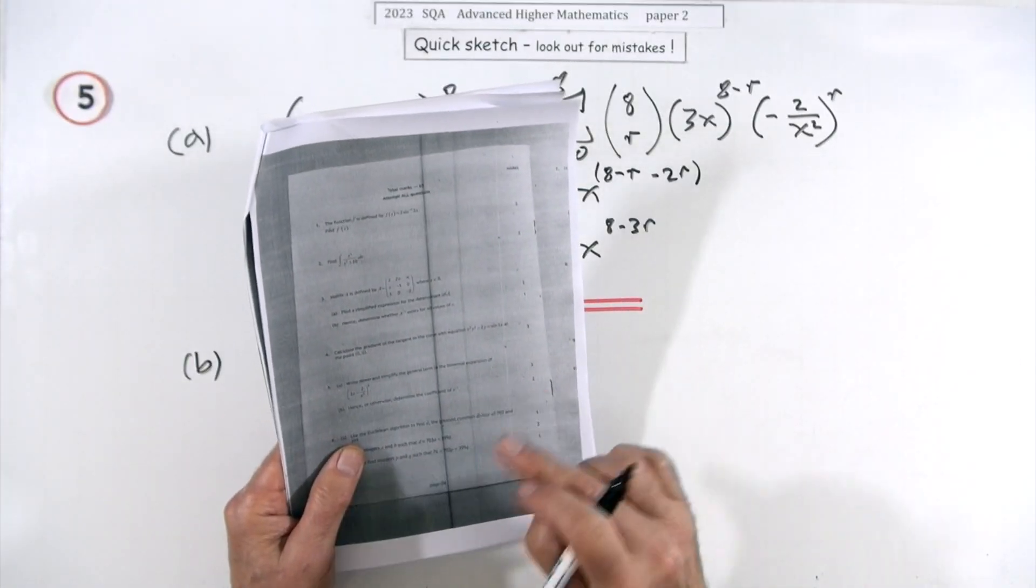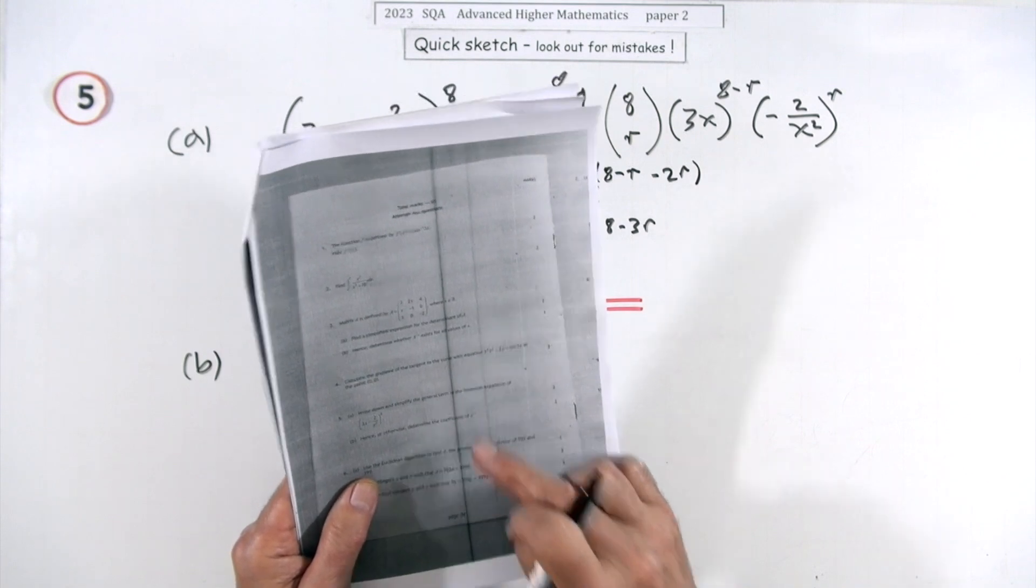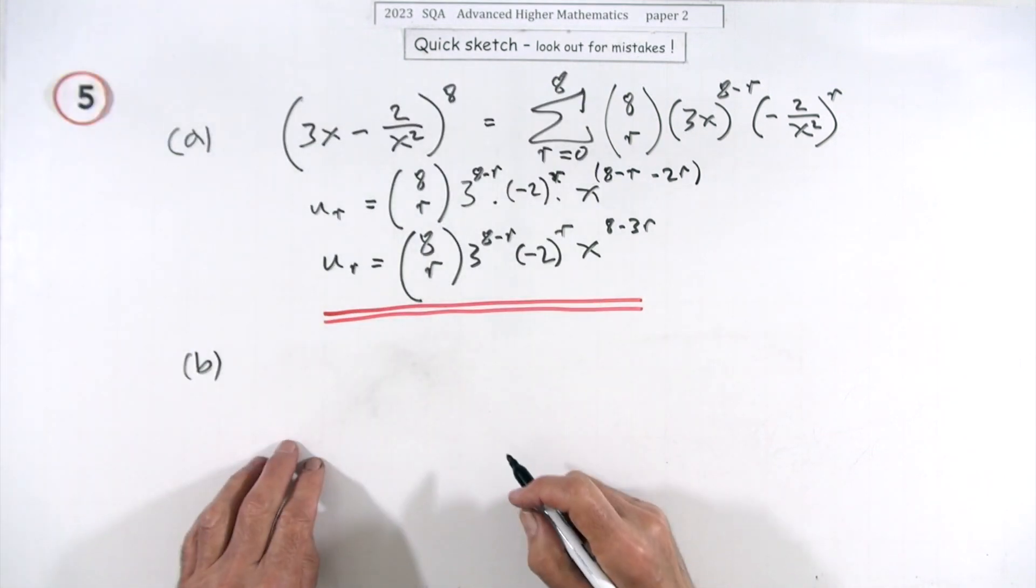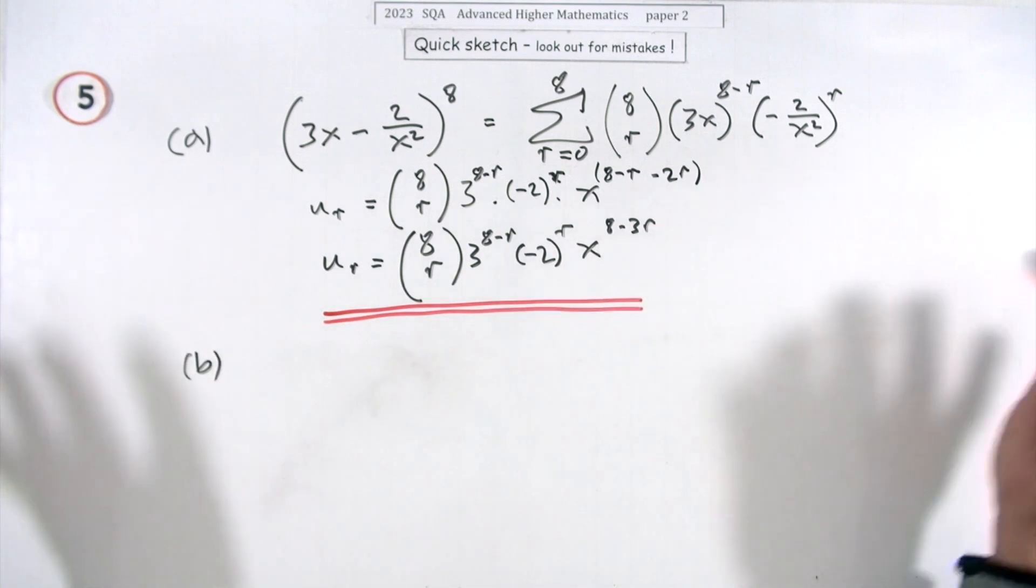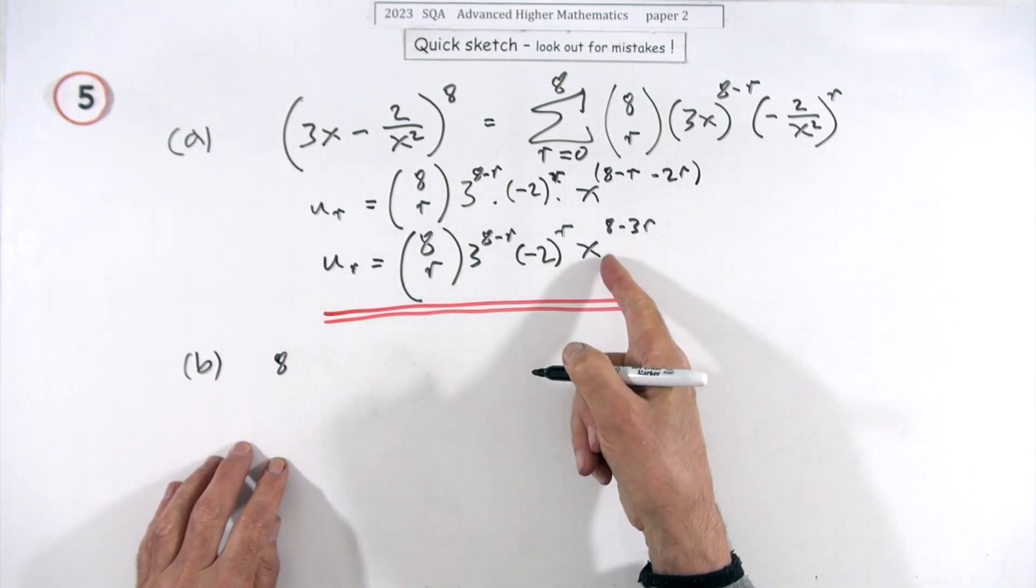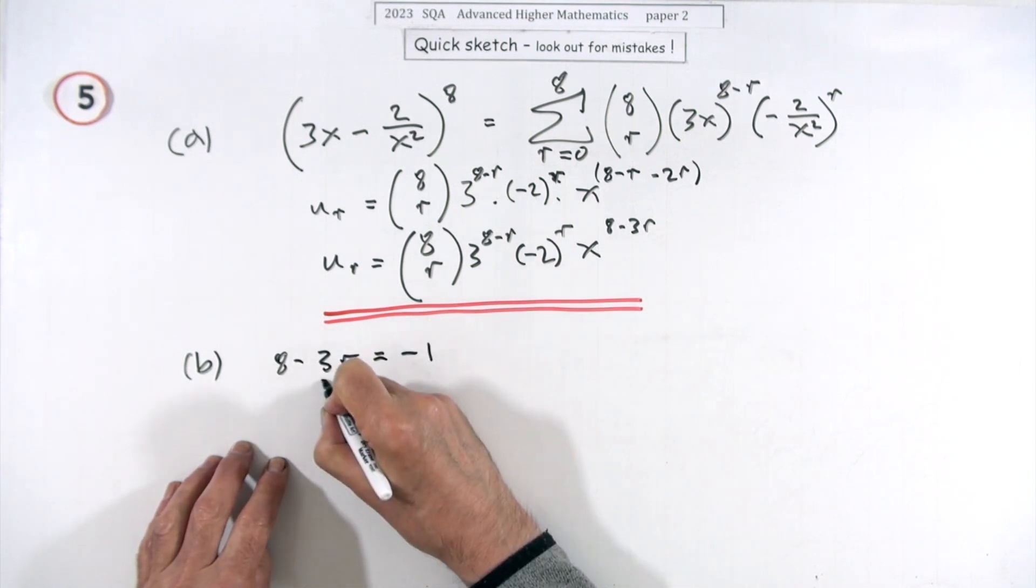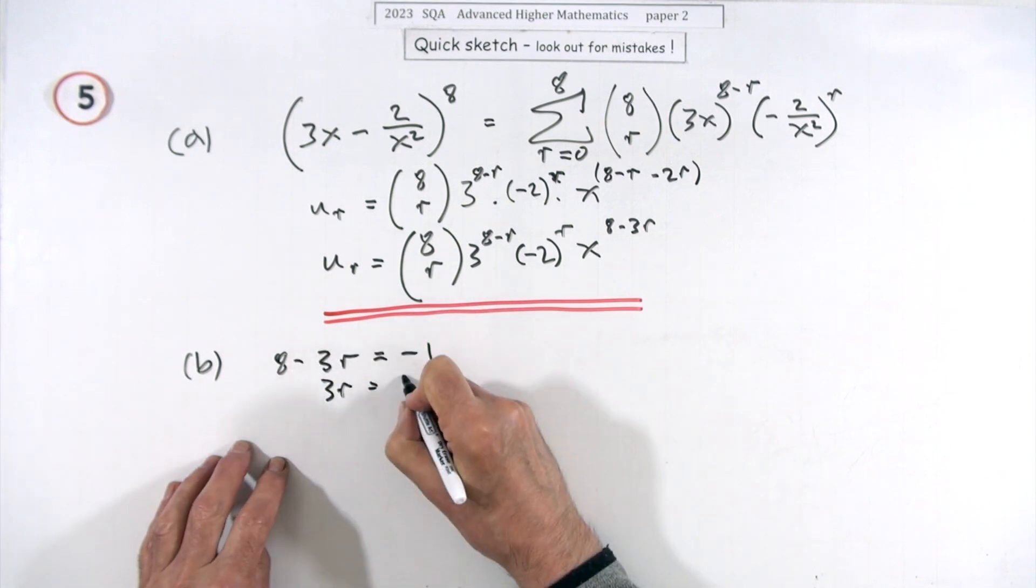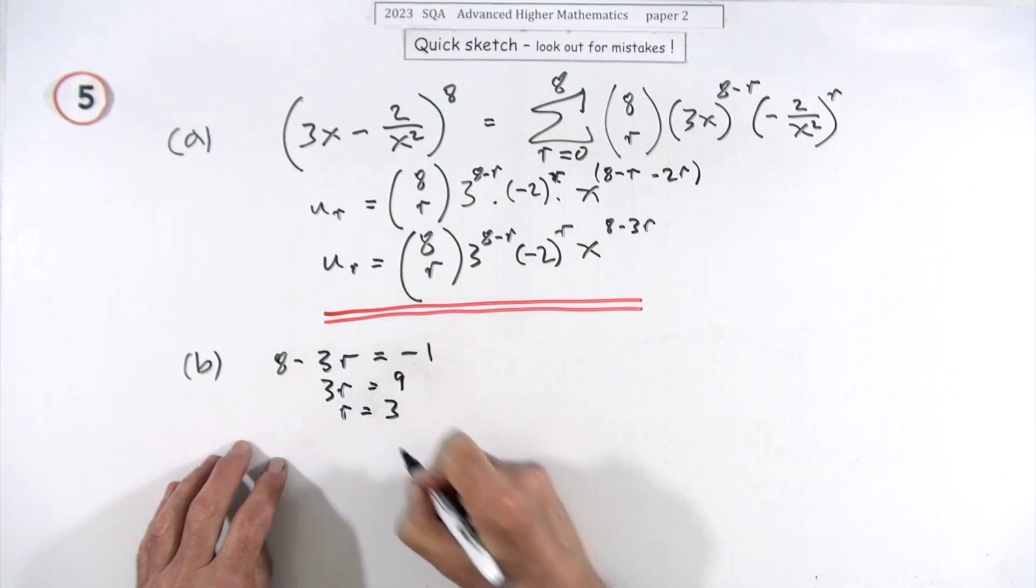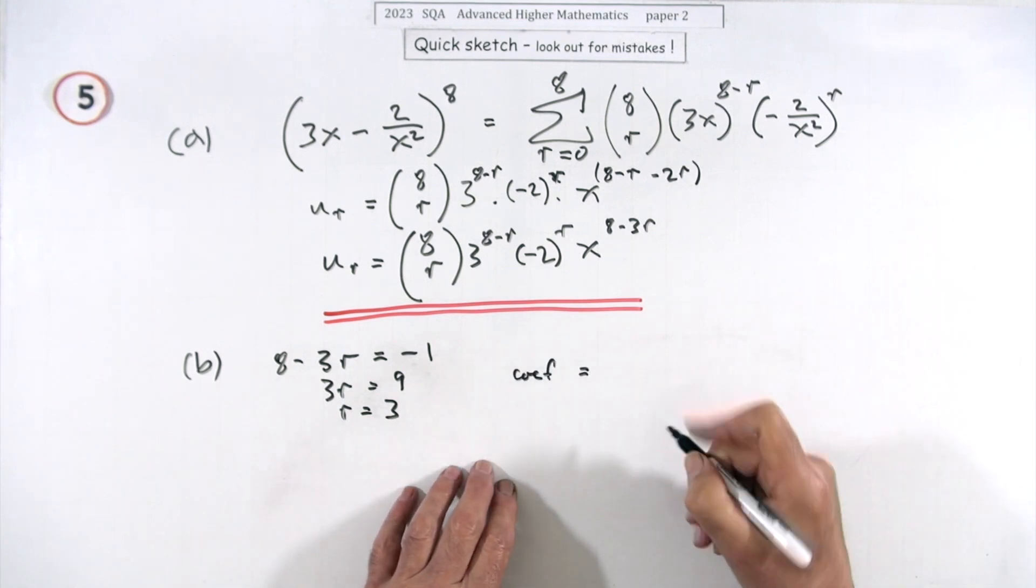And so in part b for two marks, hence or otherwise determine the coefficient of the term in x to negative one. What would otherwise be, just write it all out I don't know, but anyway if that was meant to be power negative one, then eight minus three r would have to equal negative one, so three r would equal nine, so r is going to be three. So this coefficient that you're looking for, this coefficient is going to be, I don't want the x part, just want the numerical part.